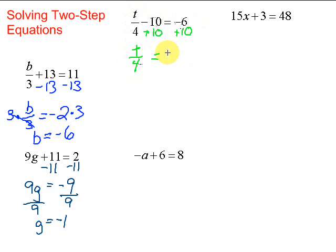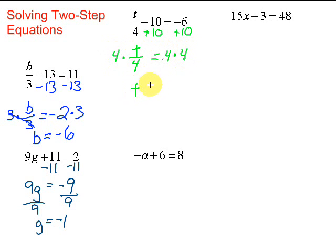Negative 6 plus 10 gives us 4. Now we have t divided by 4. What's the opposite of divided by 4? That will be times 4. Remember, do it on both sides. These cancel out — we're left with just t, which is what we want, just the variable. T equals 4 times 4, which is 16.